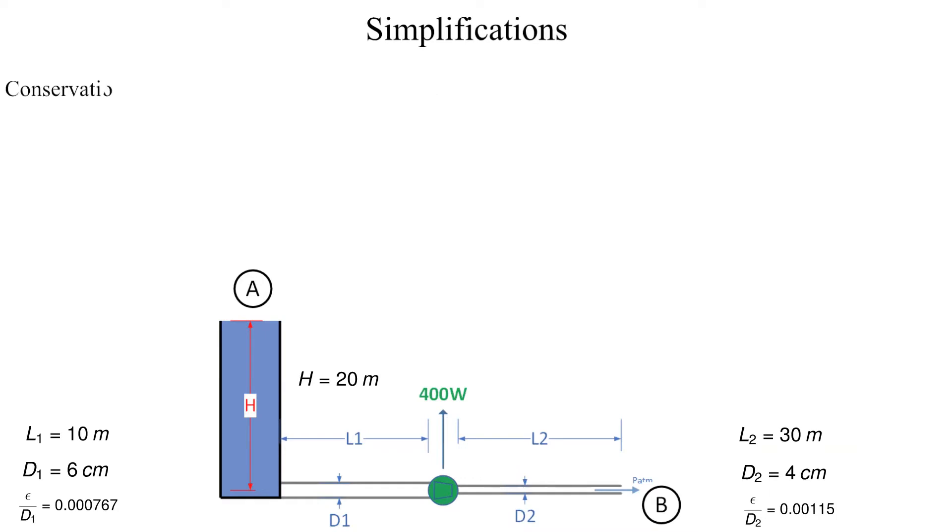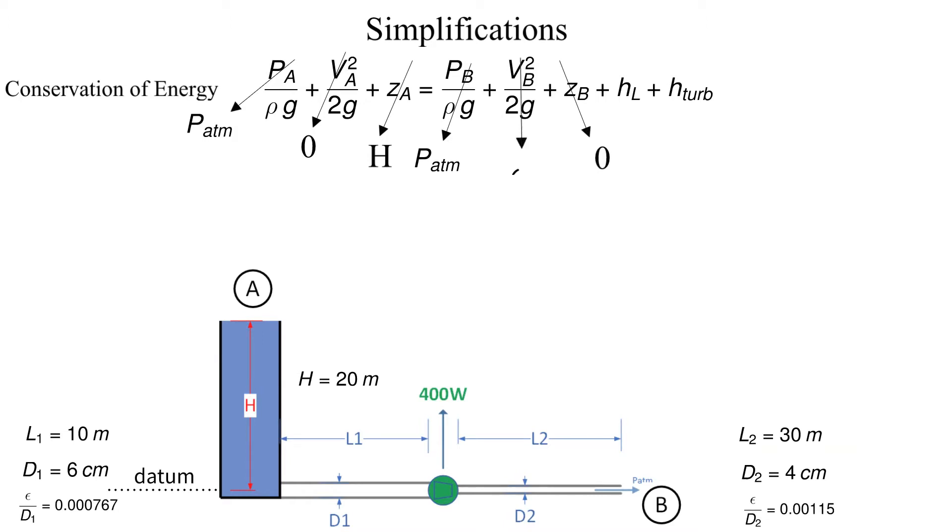Now let's simplify as shown. Note that the datum is selected at the bottom of the tank which is also the same elevation as point B.